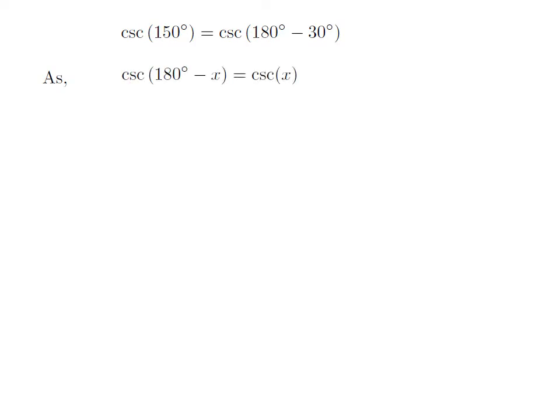As we know, the trigonometry identity cosecant of 180 degrees minus x is equal to cosecant of x.